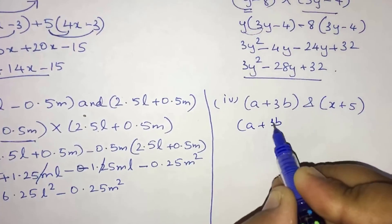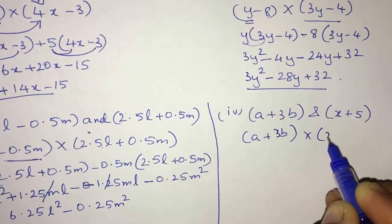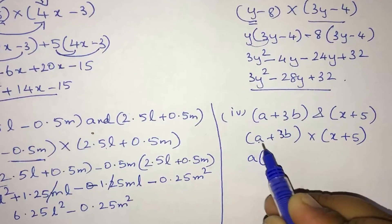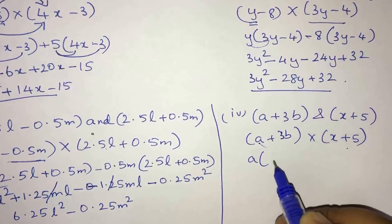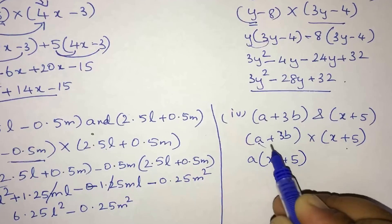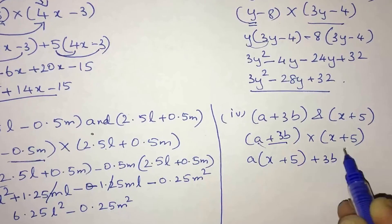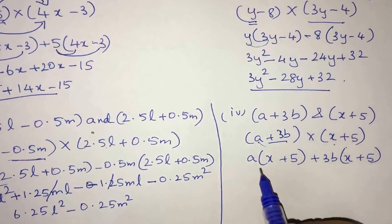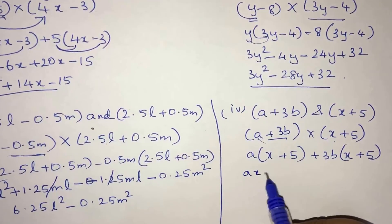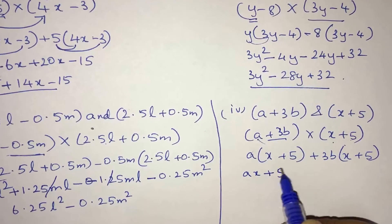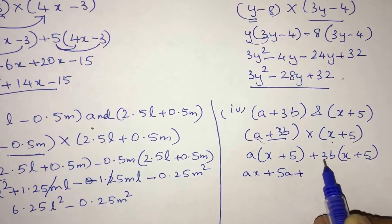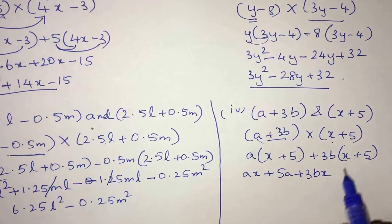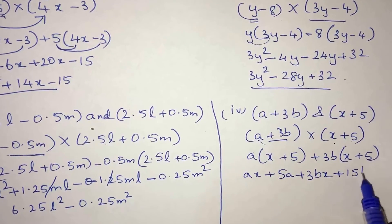Question number 4: multiply (a + 3b) into (x + 5). Taking a into (x + 5) gives ax + 5a, and 3b into (x + 5) gives 3bx + 15b.